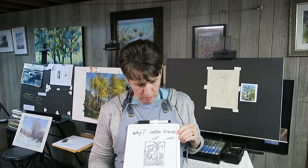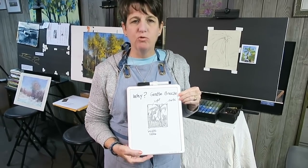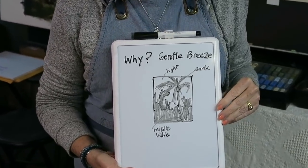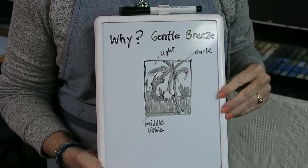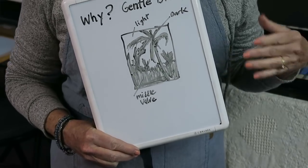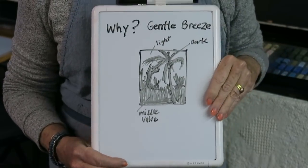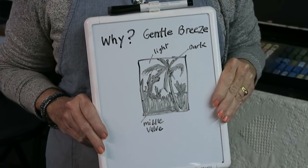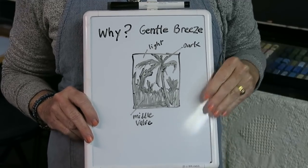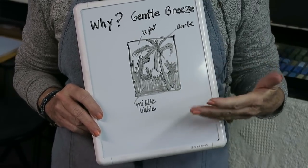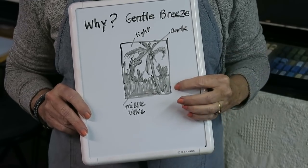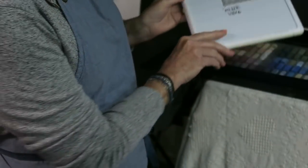Here's a shortcut I like to use — a dry erase board from the Dollar Tree. Instead of finding paper or a sketchbook for a thumbnail, I do my thumbnail right on the dry erase board. I begin by asking myself 'why' — why am I painting this scene? My 'why' for this scene was the feeling of gentle tropical breezes in the palm trees, and I'll keep that in mind as I paint.